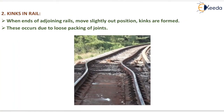Next is kinks in rail. When ends of adjoining rails move slightly out of position, kinks are formed. These occur due to loose packing of joints.